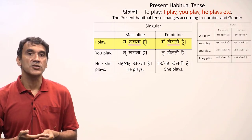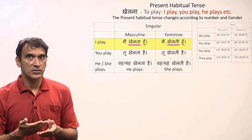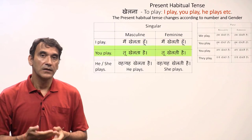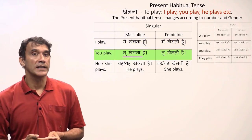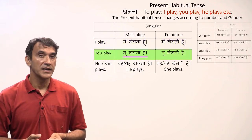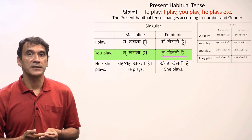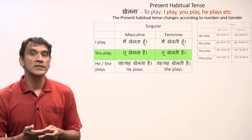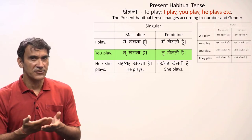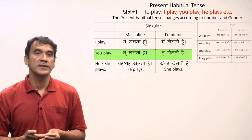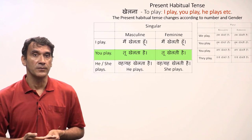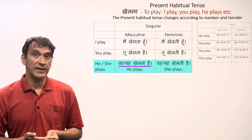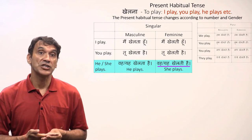For the second person singular 'tu': 'tu khailtaa hai' for a masculine subject and 'tu khailti hai' for a feminine subject — meaning you play. As mentioned in earlier grammar points, students should avoid this form as it is extremely informal and can often sound rude. For the third person, 'woh/yeh khailtaa hai' means he plays, and 'woh/yeh khailti hai' means she plays.